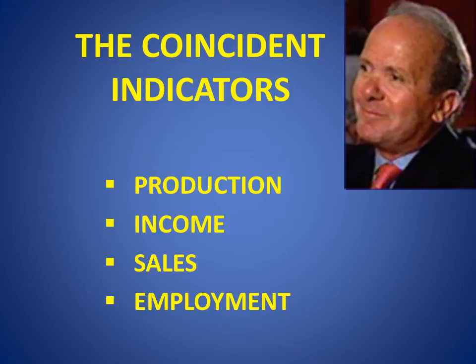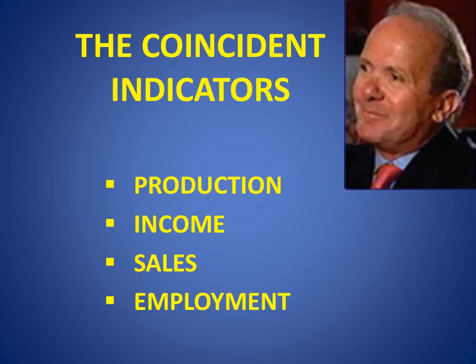The four main indicators that tell you what is happening right now in the economy and in the business cycle are: production — that is, how much is produced now by the U.S. economy; income — how much people are making right now; sales — how much people are buying; and employment — how many people are employed. These are very practical, very specific indicators that tell you what's going on right now in the economy and the direction of the business cycle.